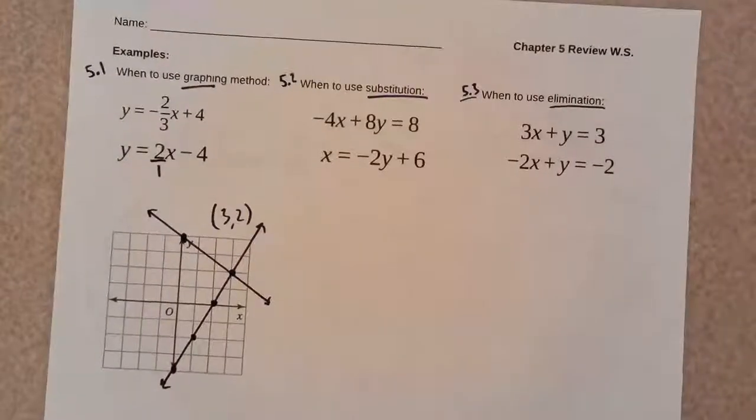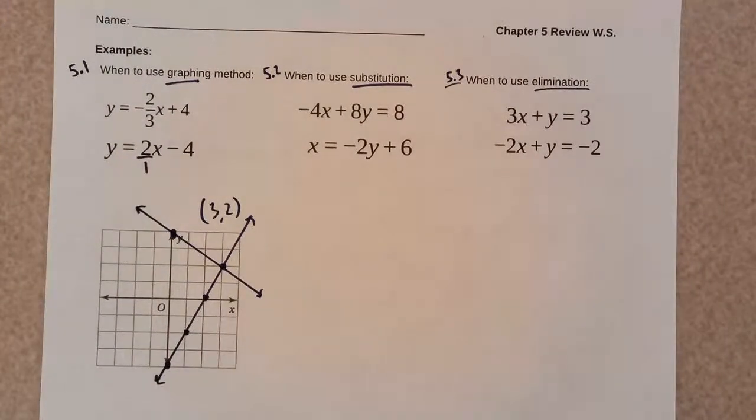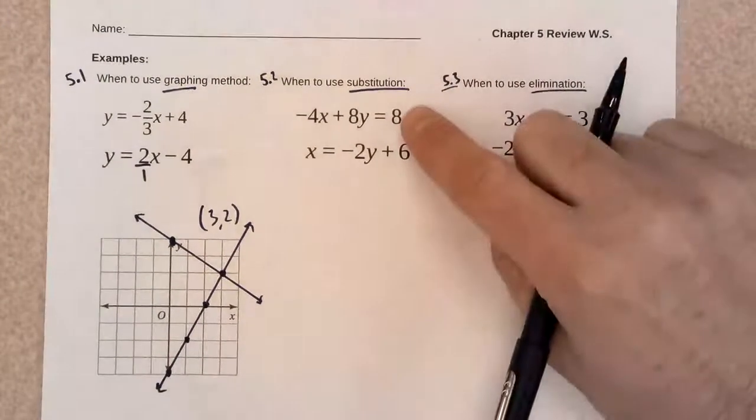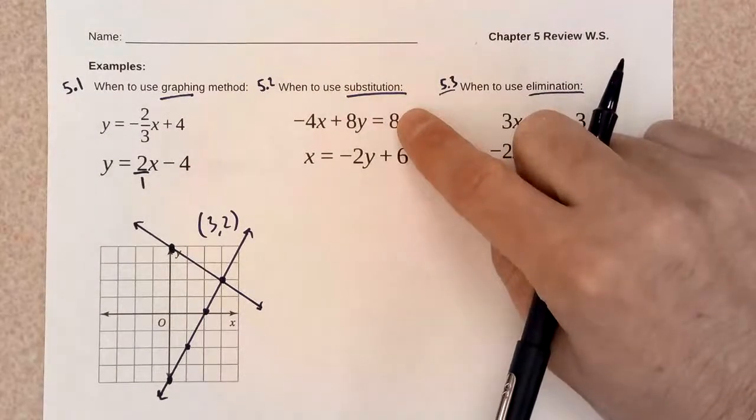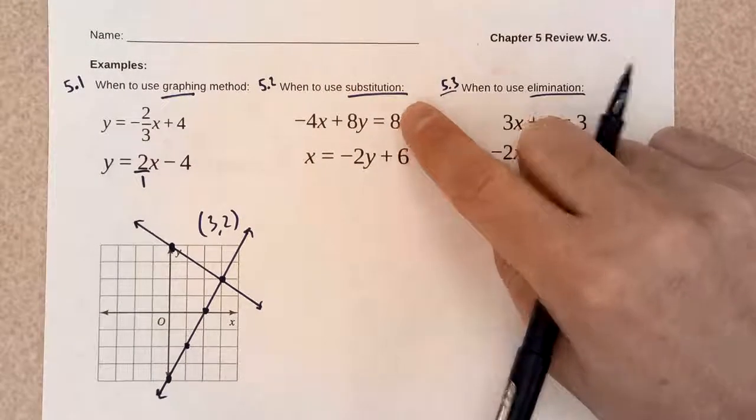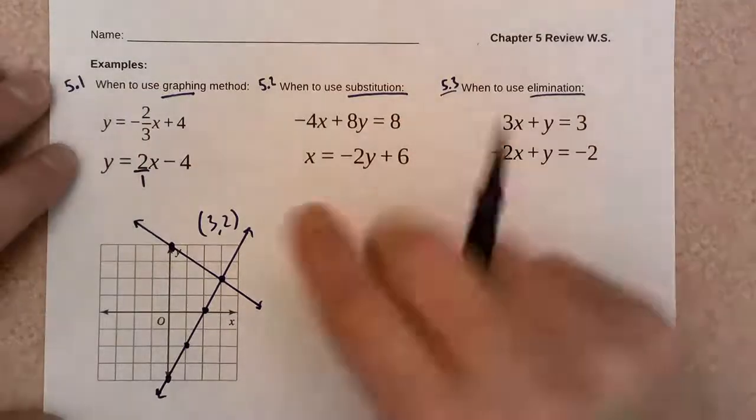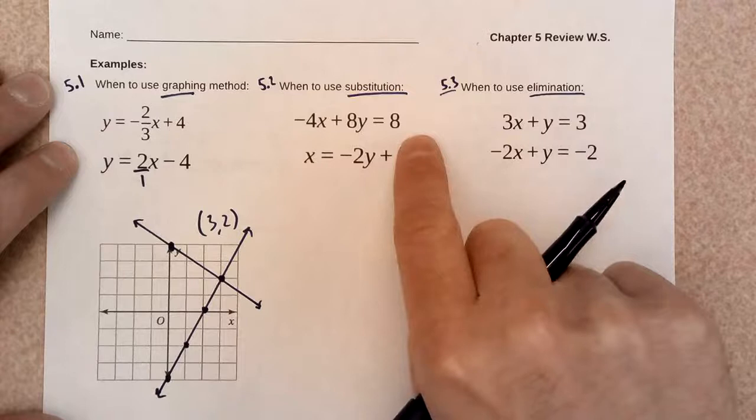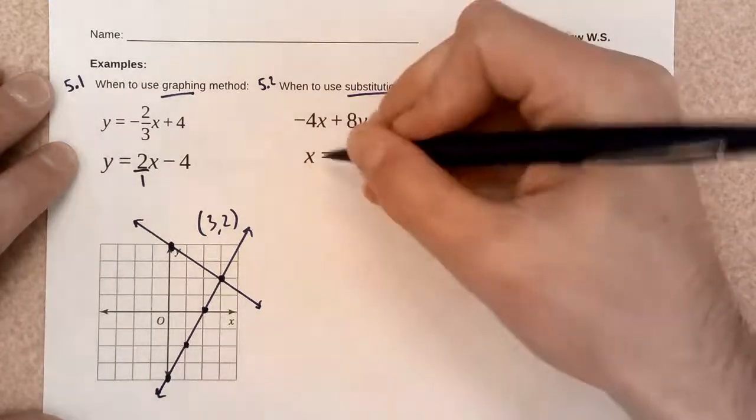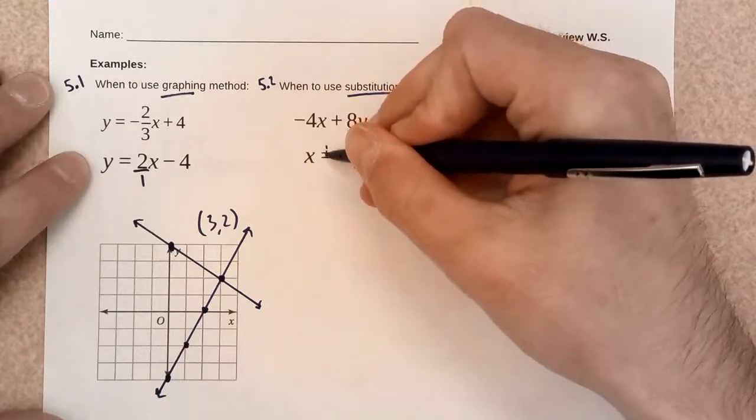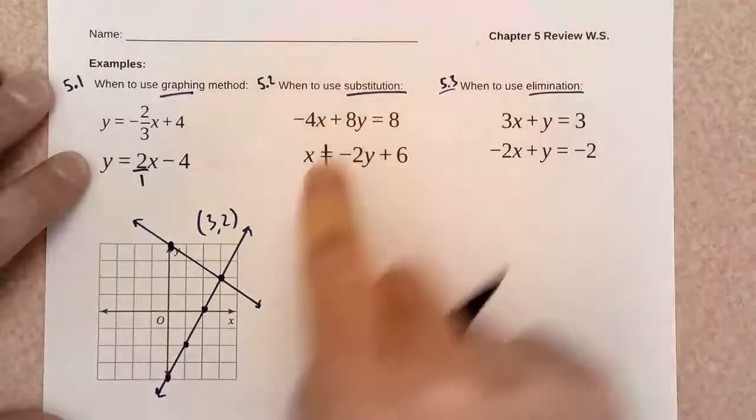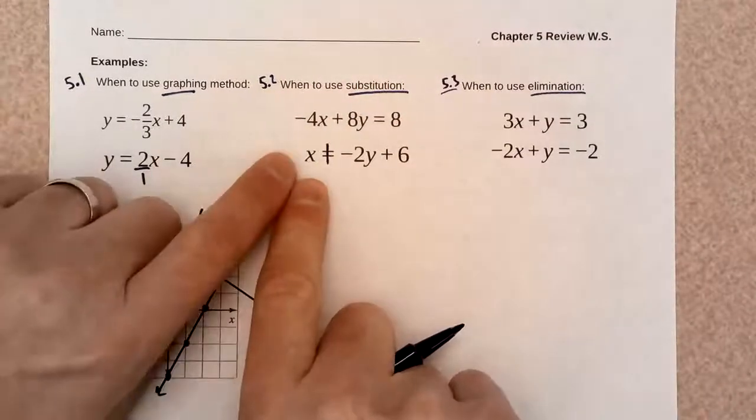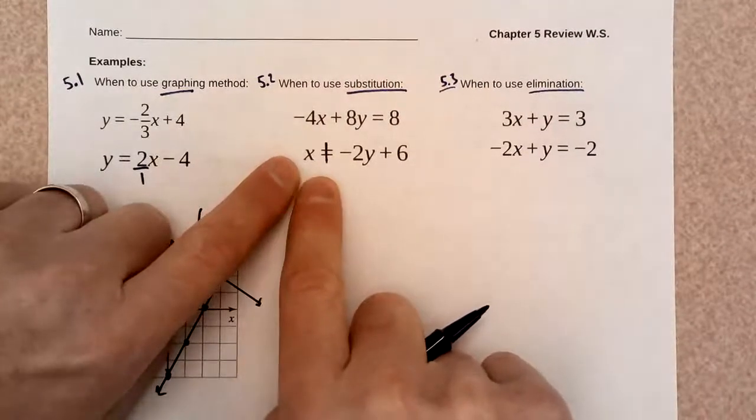All right, substitution method. This works well when at least one variable is by itself. If I look real close, first equation, none of these variables are by themselves. But in the second equation, I do have an x by itself, totally by itself. So, substitution is going to work well.